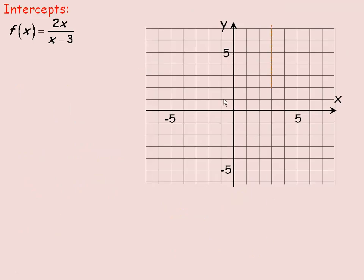Back to our graph: we'll draw the vertical asymptote at x equals 3. Approaching the vertical asymptote from the right, the graph goes towards a large positive value; from the left, towards a large negative. The horizontal asymptote is y equals 2. Towards the far right, the graph stays above y equals 2.